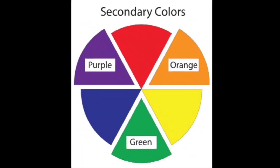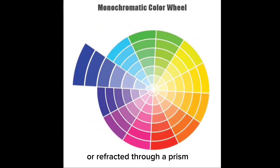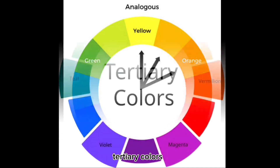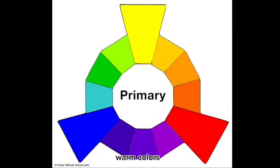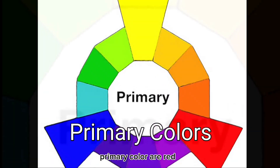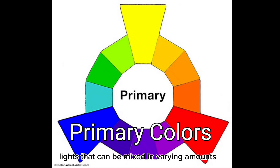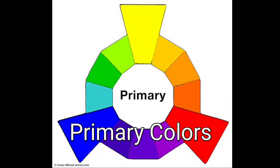The third element is color — the way we see light reflected from a surface or refracted through a prism. Colors can be classified into primary, secondary, tertiary, analogous, complementary, monochromatic, warm, and cool colors. Primary colors are red, blue, and yellow. They consist of colorants or colored lights that can be mixed to produce a gamut of colors — essential for electronic displays, color printing, and painting.